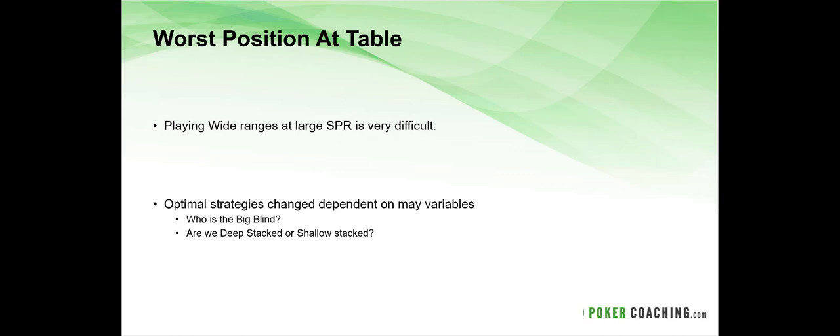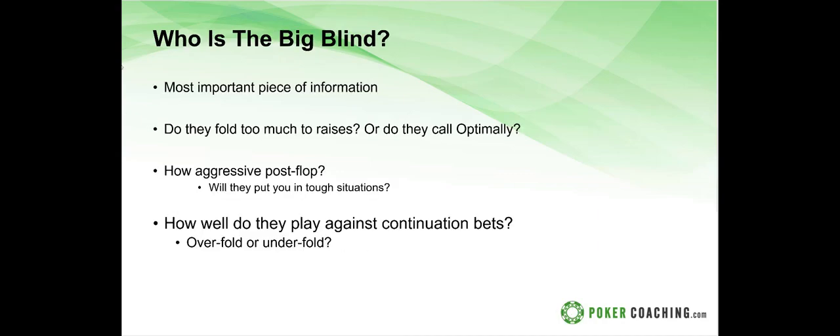Optimal strategies change depending on two key variables: one, who is the big blind, and two, how deep or shallow are the stacks. The most important piece of information is who is in the big blind. Do they fold too much to raises? Do they call optimally? How aggressive are they post-flop? Will they put you in tough situations? And how well do they play against continuation bets — do they over-fold or under-fold?